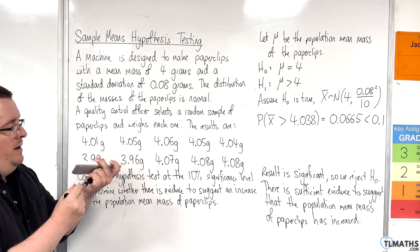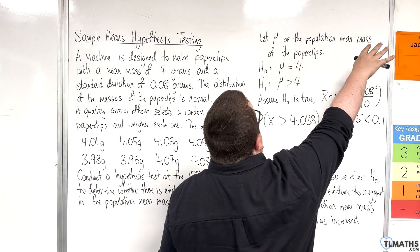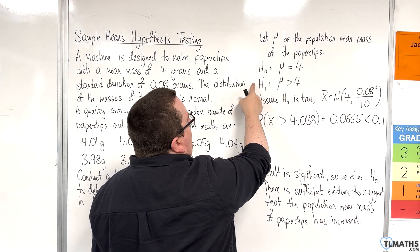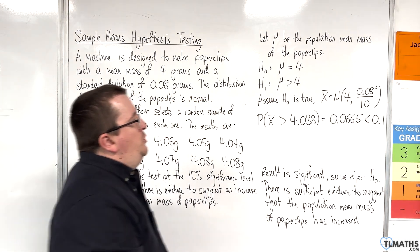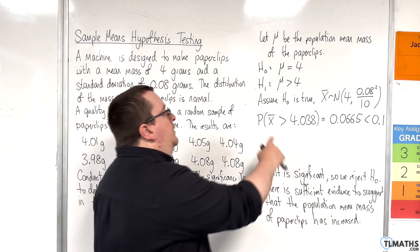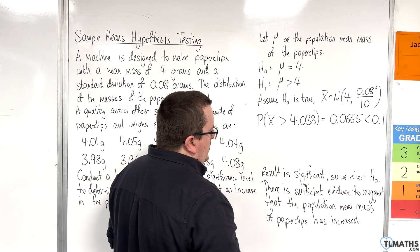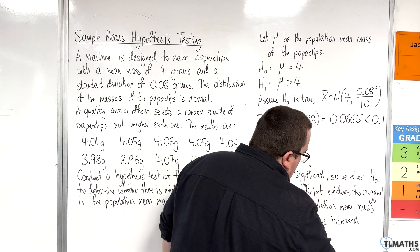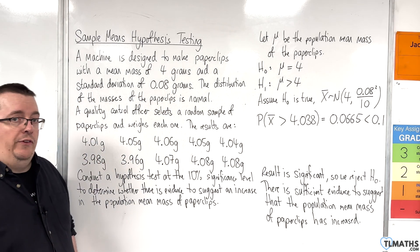That's my hypothesis test. We start off with let μ be the population mean in context. Null and alternative hypotheses written out. Set up the normal distribution for the sample means. Find my probability. Compare it against the significance level. Conclude that we reject, then a written conclusion that is non-committal in context.